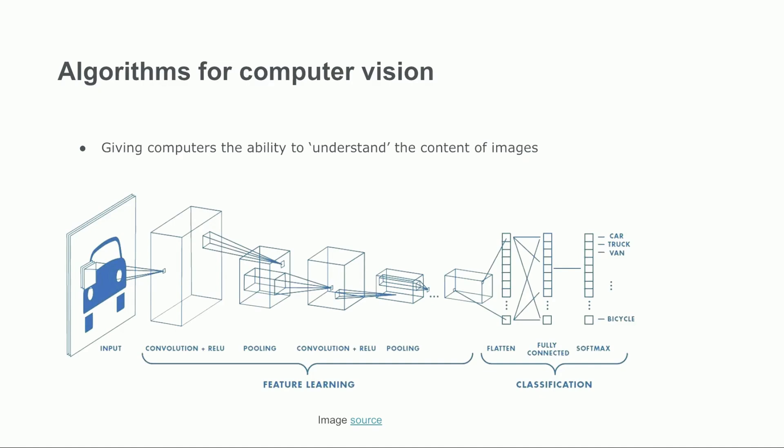Here, the task of the network is saying whether the input image is a car, a truck, a van, a bicycle, or any other class that we have in our labeled training data.